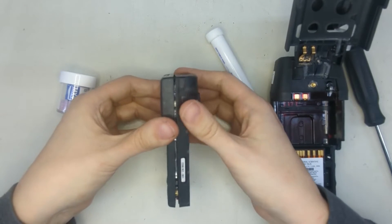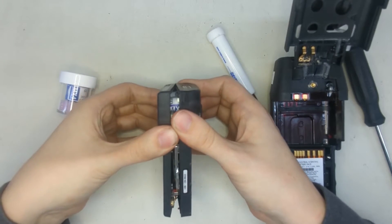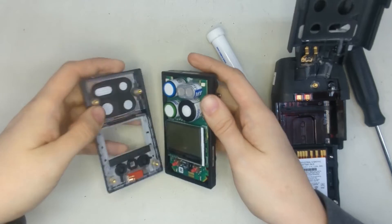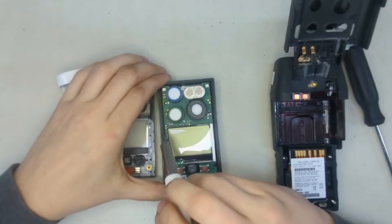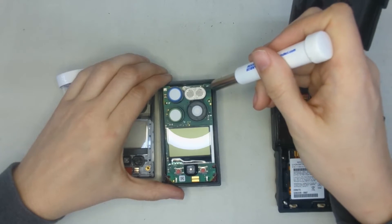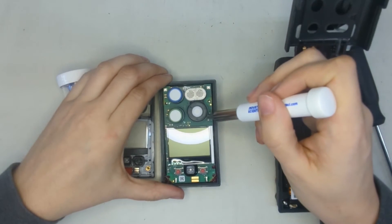Okay, now you can see the unit comes apart a little easier. And you just pull it straight away there. Okay, inside we have our sensors. Here's our CO, here's our hydrogen sulfide, this is our LEL combustible sensor, and this is our oxygen sensor.